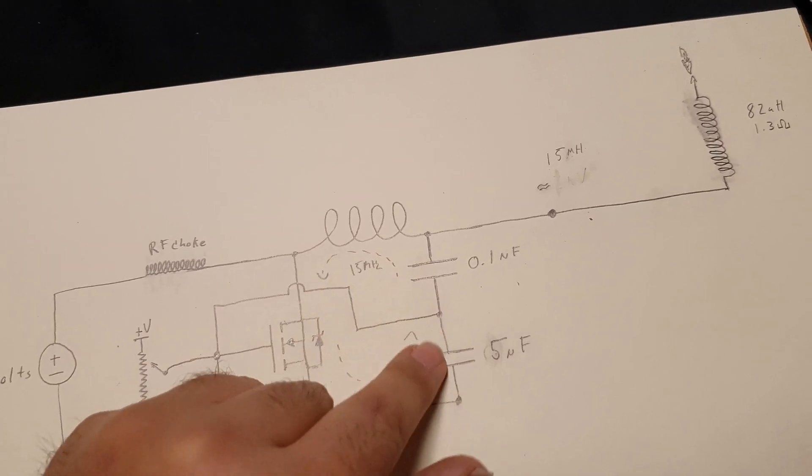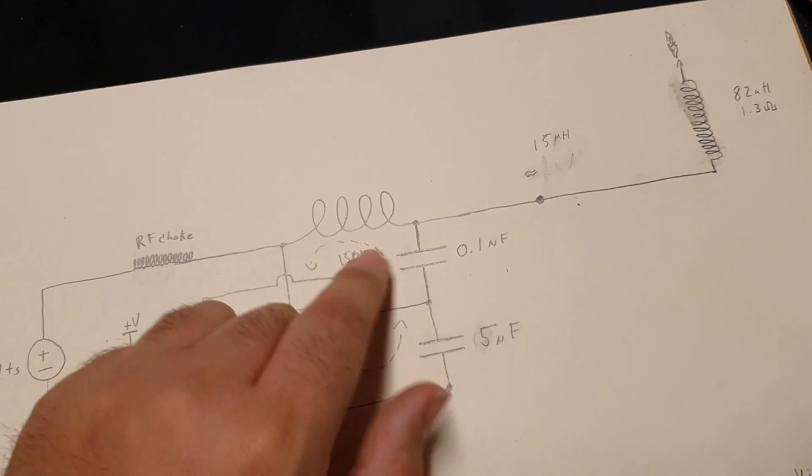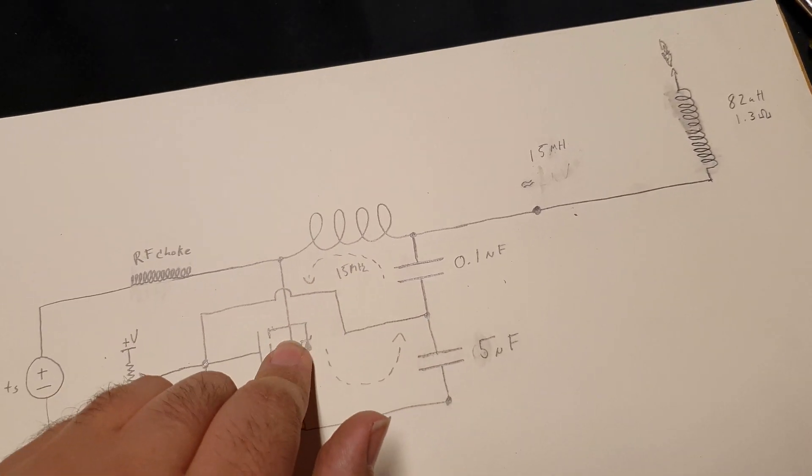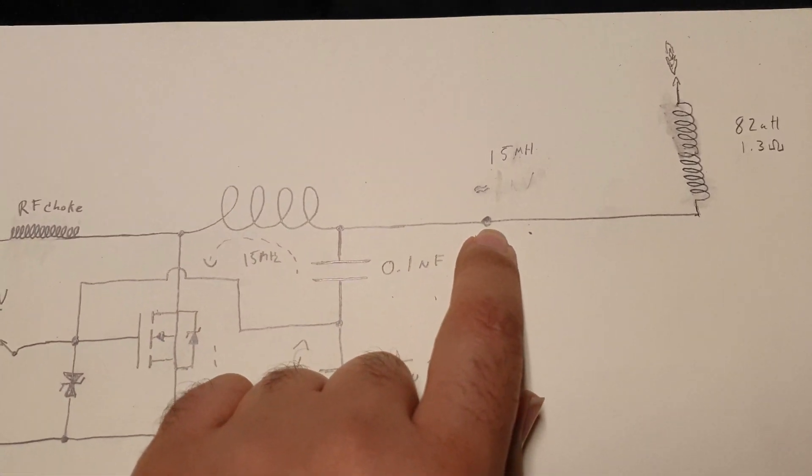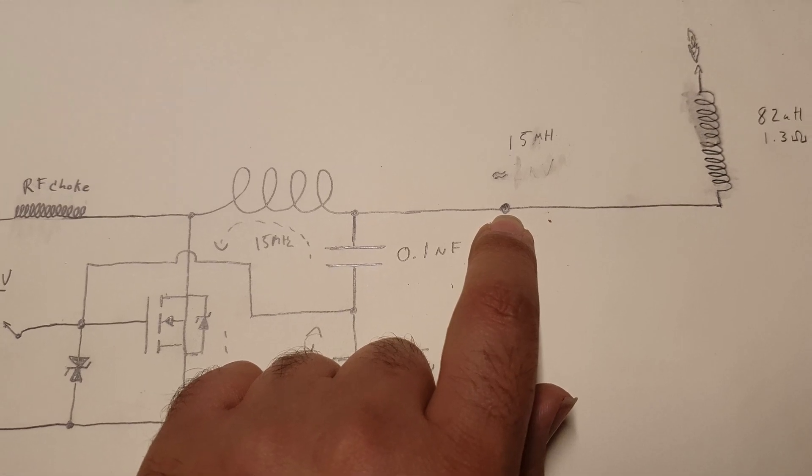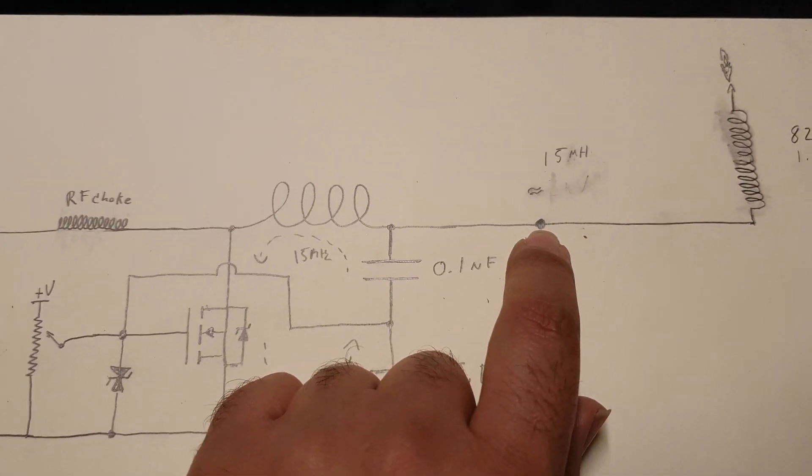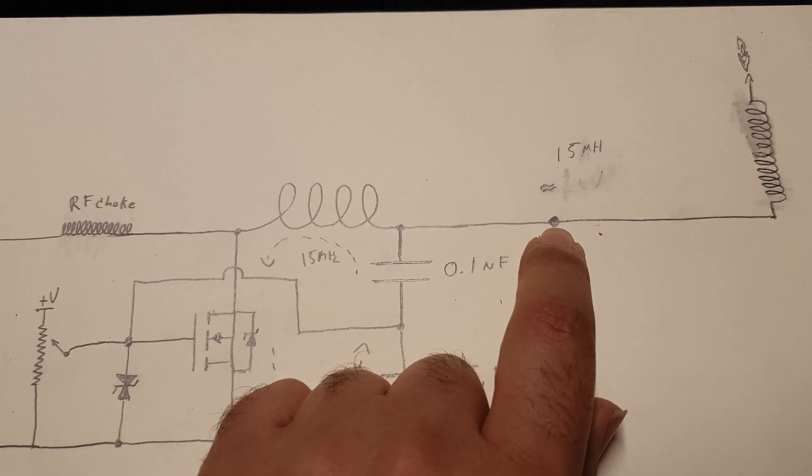So we've got currents circulating back and forth in this LC circuit being pulsed by the transistor. So this provides us with a 15 megahertz signal that I've measured with the scope to be at least 20 volts peak to peak.